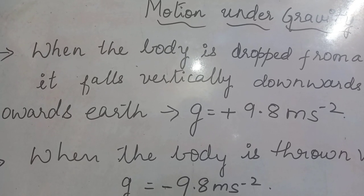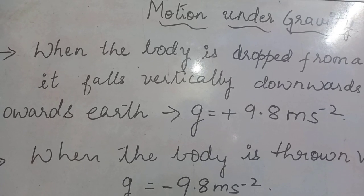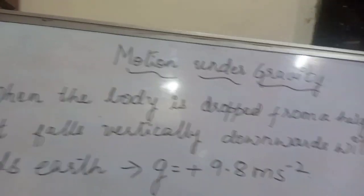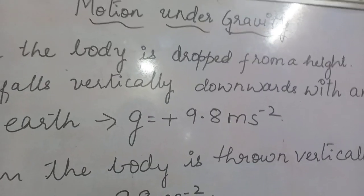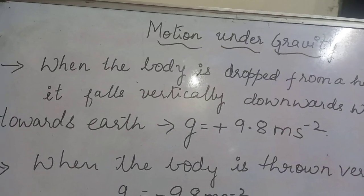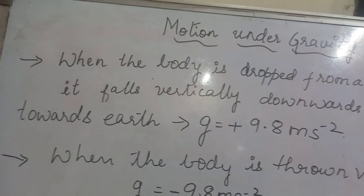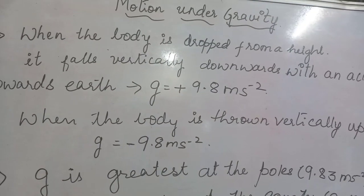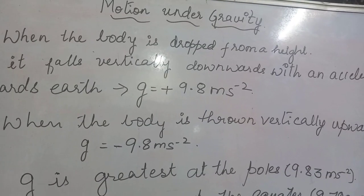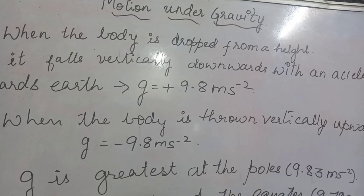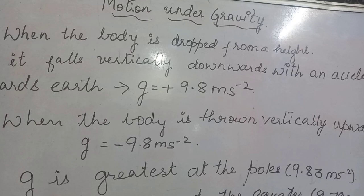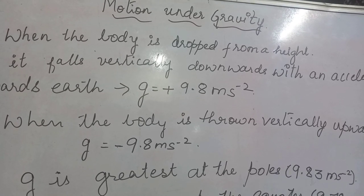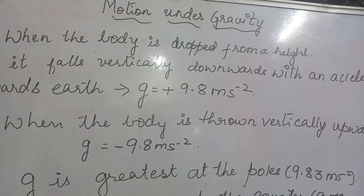Objects are thrown in the upward direction and downward direction. When the body is dropped from a height, it falls vertically downwards with an acceleration towards the earth, g equal to 9.8 meter per second square. When the body is thrown vertically upward, g is taken as negative, that is minus 9.8 meter per second square, because it is moving against gravity.